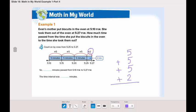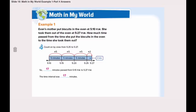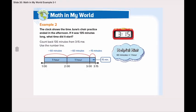What is the total? 5 plus 5 is 10, 10 plus 5 is 15, 15 plus 2 is 17. So, 17 minutes has passed from 5:10 to 5:27. The time interval was 17 minutes. Let's move to example 2.